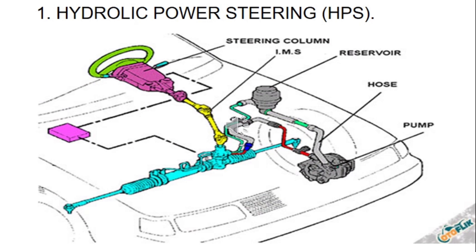Perhatikan pada gambar berikut, di situ adalah rangkaian hydraulic power steering yang diletakkan di mobil. Posisinya untuk hydraulic power steering adalah seperti yang di gambar tersebut. Kalau kalian perhatikan di situ ada bagian-bagiannya, diantaranya adalah ada pompa atau pump, kemudian ada hose atau selang atau pipa, kemudian ada reservoir, kemudian ada steering column. Itu diantaranya adalah bagian-bagian dari hydraulic power steering.